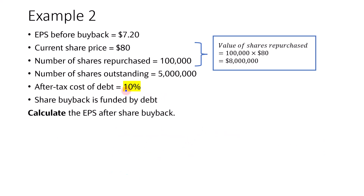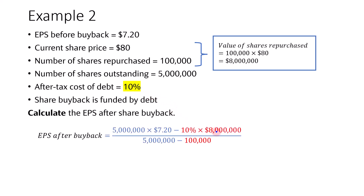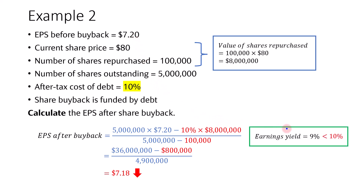What if the after-tax cost of debt is 10%, which is higher than the 6% in example 1? We have to recalculate the after-tax interest expense, which is 10% times $8 million — that would be $800,000. With that, the EPS after buyback would actually decline to $7.18. Comparing the earnings yield versus the after-tax cost of debt, we see that the earnings yield of 9% is now lower than the after-tax cost of debt of 10%, so we expect the EPS to fall after the share buyback.